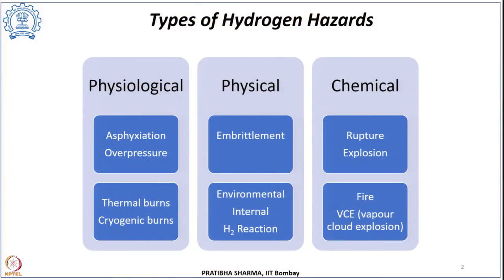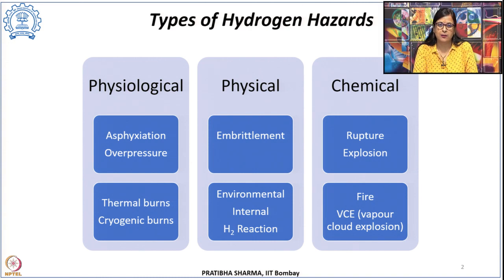In the previous class, we have seen the different characteristics and properties of hydrogen which are important to know before we look at the hydrogen safety related aspects. In this lecture, we will see the different hazards associated with hydrogen. Broadly, we can categorize the type of hazards into 3 categories: physiological hazards, physical hazards, and chemical hazards.